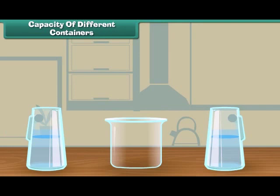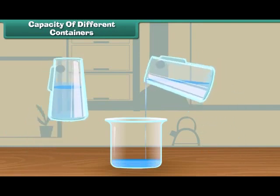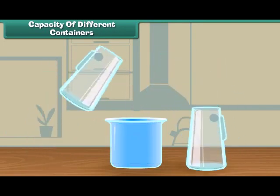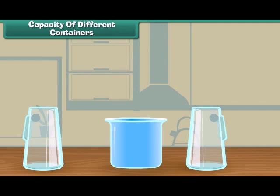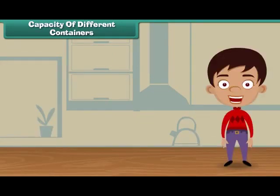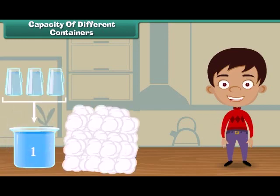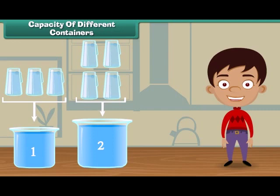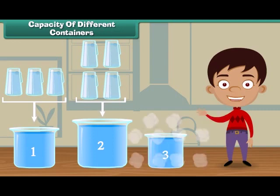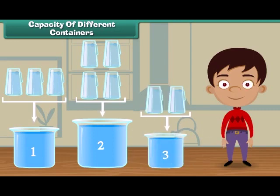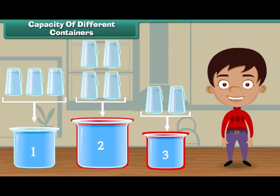Now let us fill the third vessel. One and two. Two jugs of water fill the third vessel. Friends, we have seen that vessel one is filled with three jugs of water. Vessel two is filled with four jugs of water. And vessel three is filled with two jugs of water. It means vessel three holds the least water. And vessel two holds the most water.